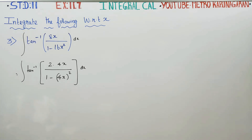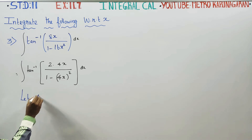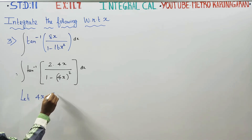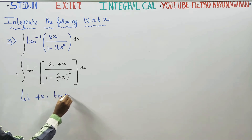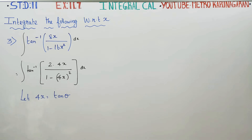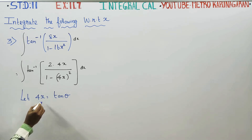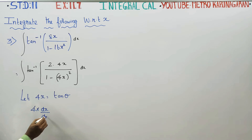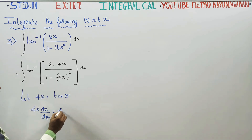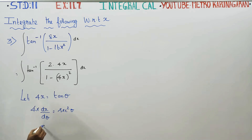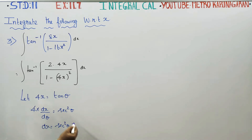Next stage — substitution method starts. Let 4x equal to tan theta. Differentiate with respect to theta. Differentiating tan gives secant square theta, so dx is equal to secant square theta into d theta by 4. This is the substitution.